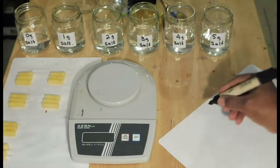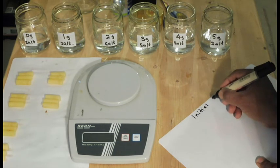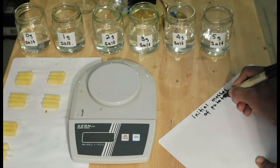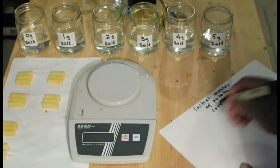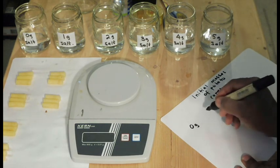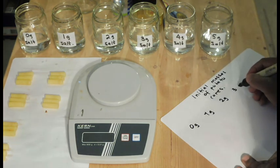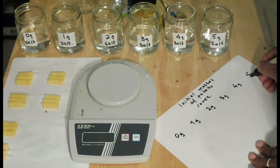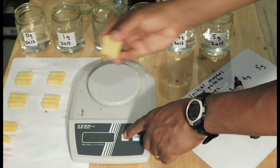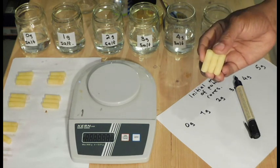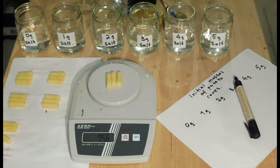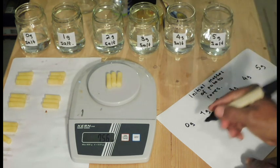Time to weigh the core sets and record the initial masses or weights. Keeping track of data is key to scientists. You can create a good table to record your observation. Weigh the first set of potato cores. Record the mass in the table.